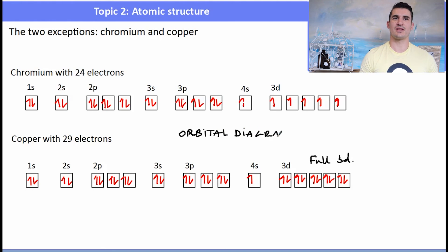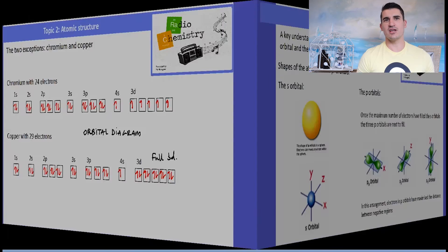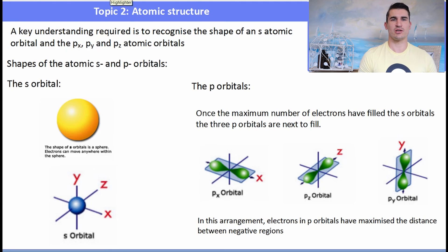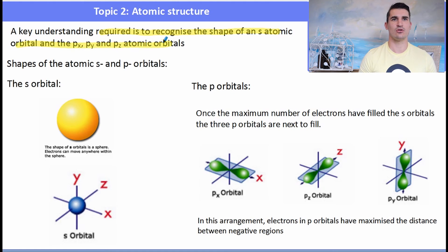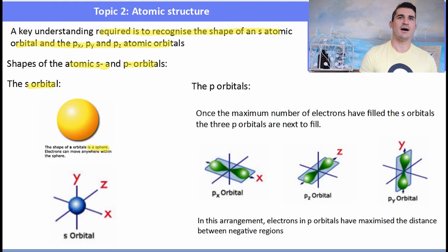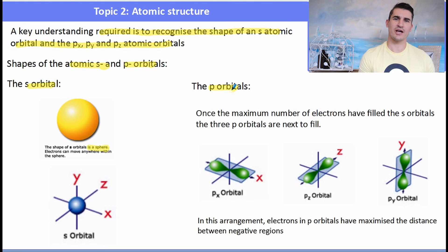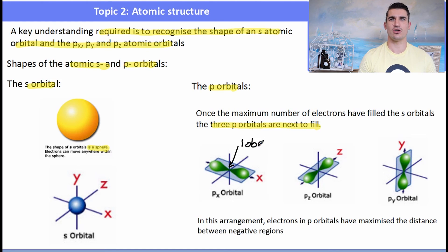If asked to draw these arrangements, this is called an orbital diagram. An s orbital looks like a sphere in three dimensions, crossing the x, y, and z axes. A p orbital looks like an infinity sign — there are three p orbitals, and you must clearly show the lobes on your diagram.